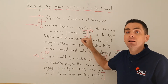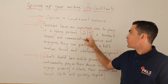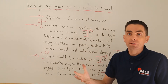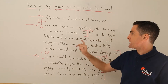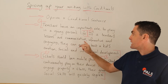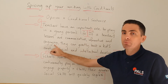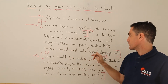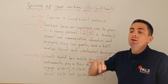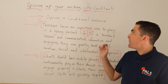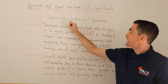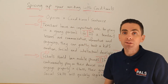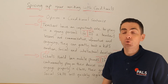as we learned in the last video, this gives you a dependent clause: 'If a teacher's lessons are communicative, informative, and engaging' — that's a dependent clause. 'They can greatly boost a kid's emotional, social, and intellectual development' — that's an independent clause. So you have a complex sentence here, which gets you good grammatical range points from the examiner for task two writing.